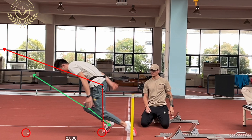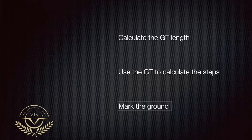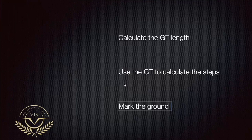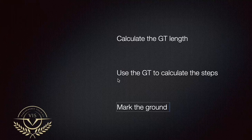Everyone is probably asking: how do we calculate the strides to ensure the stride length is precise for your athlete? There are three steps. Step one: calculate the GT length — the greater trochanter length of the athlete's leg from the GT point to the floor, following a line parallel to the leg, not perpendicular to the ground. Step two: use the GT measurement to calculate each step one by one. Step three — probably the longest part — is marking the ground. Steps one and two take a couple of minutes; marking may take longer.